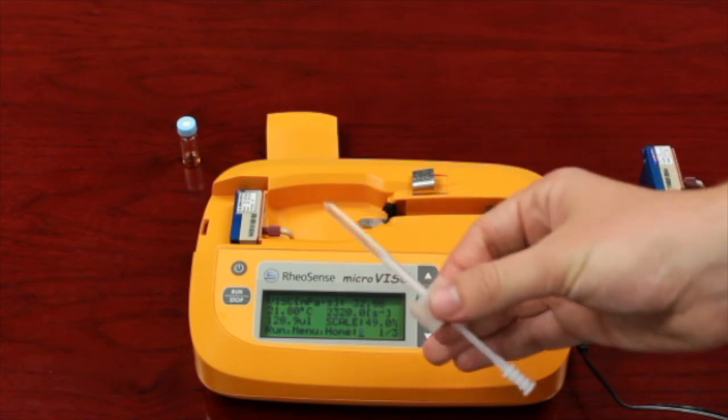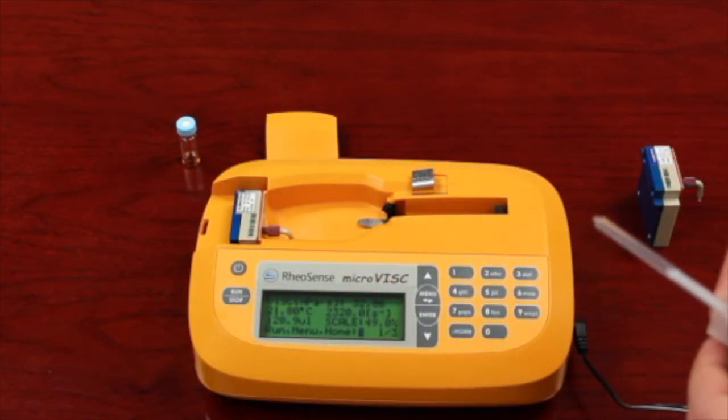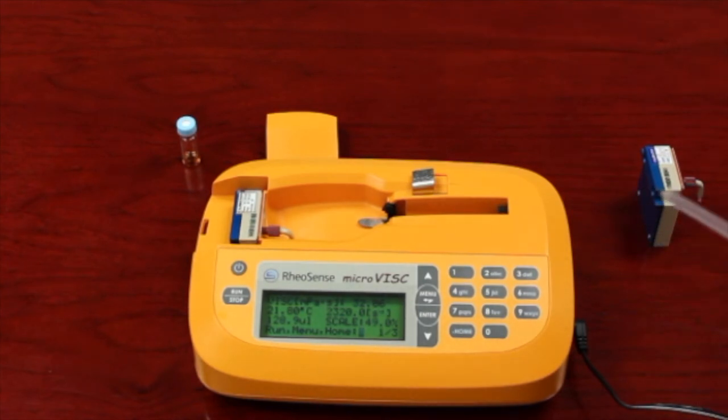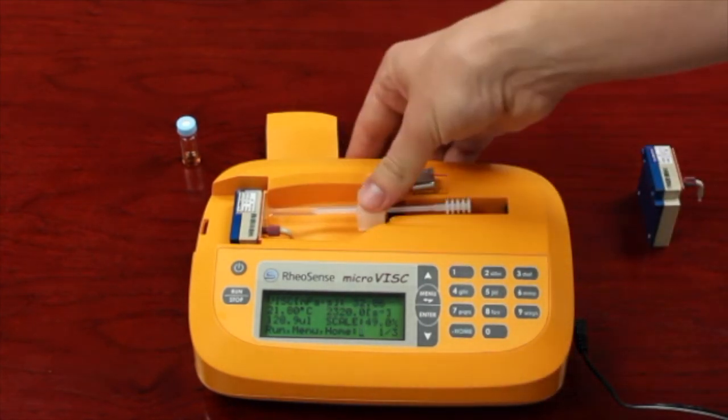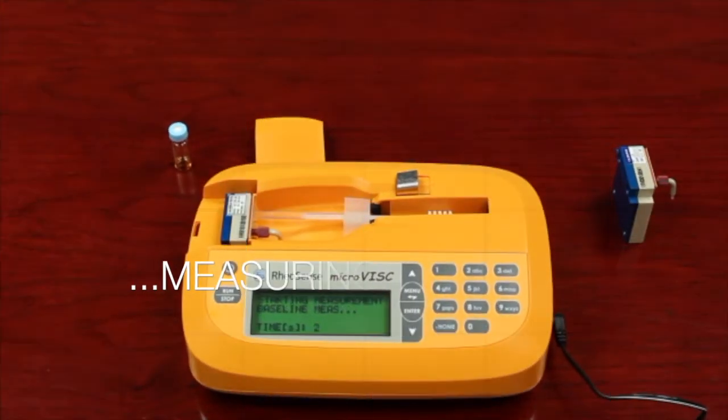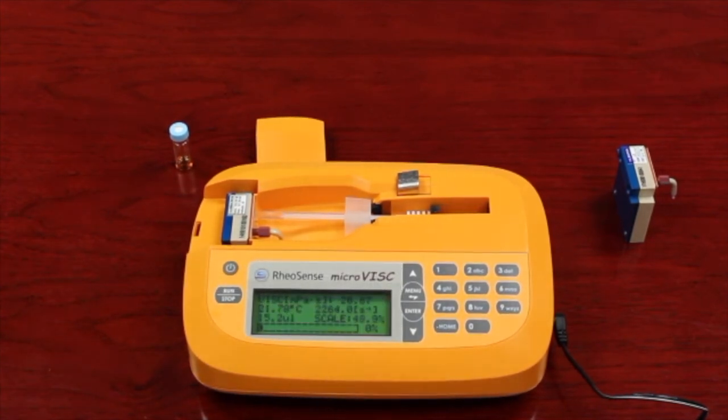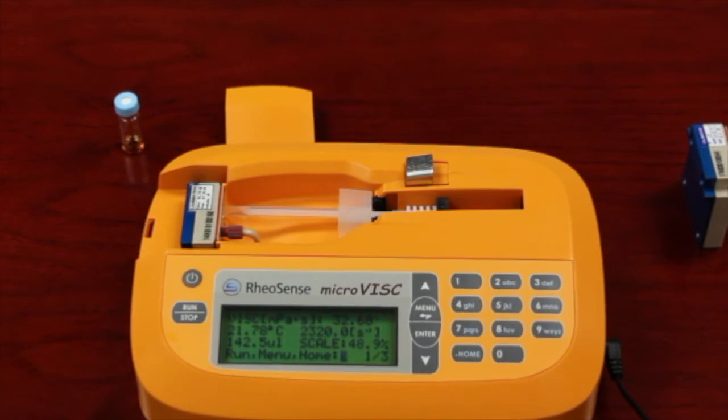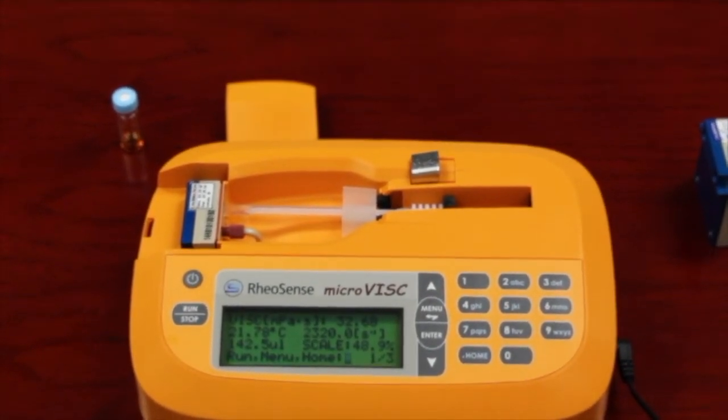So we have our terpene sample that we're going to measure now. And we had to switch out our chip to one that handles lower viscosities because this will be outside of the range that that other chip handles, but we'll go ahead and measure it real quick. All right. So for our terpenes, we get a viscosity of around 32 centipoise.